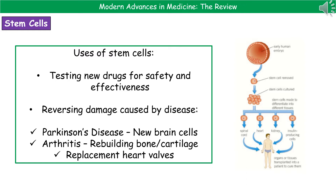This could include using stem cells to treat Parkinson's disease by generating new brain cells, rebuilding bone or cartilage for people suffering with arthritis, or generating replacement heart valves for faulty ones. Stem cells therefore have a potentially huge number of uses in reversing damage already caused by disease, by creating that missing piece of tissue.